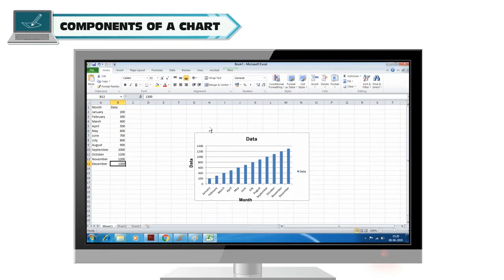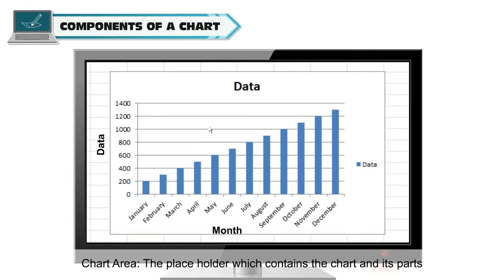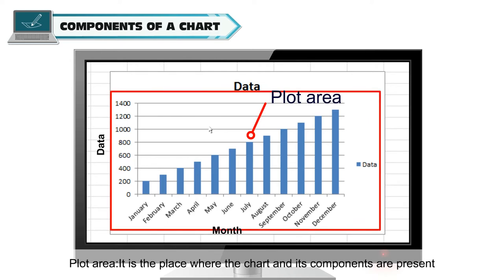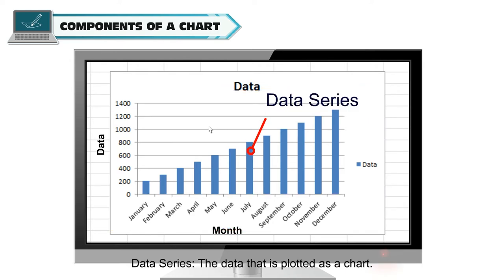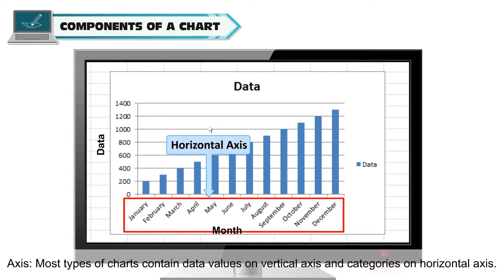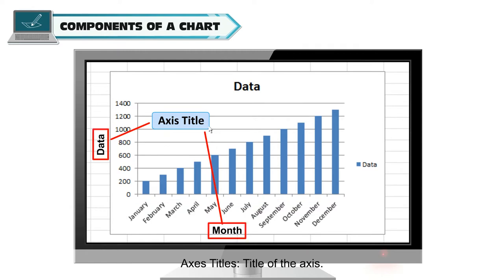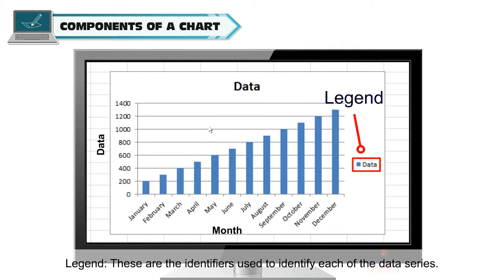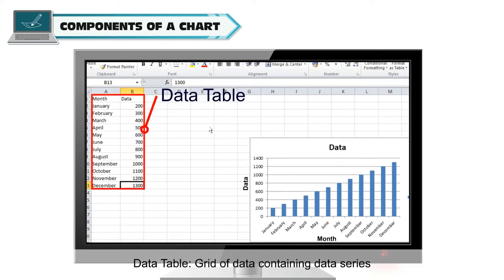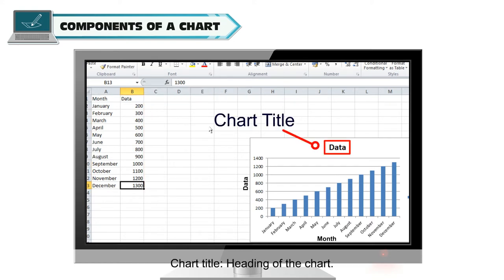Components of a chart: Chart area is the placeholder which contains the chart and its parts. Plot area is the place where the chart and its components are present. Data series is the data that is plotted as a chart. Axis — most types of charts contain data values on the vertical axis and categories on the horizontal axis. Axis title is the title of the axis. Legend — these are the identifiers used to identify each of the data series. Data table is a grid of data containing data series. Chart title is the heading of the chart.